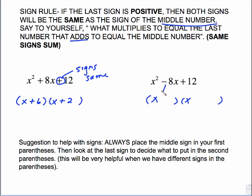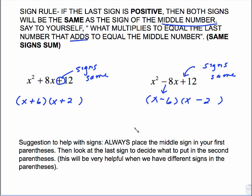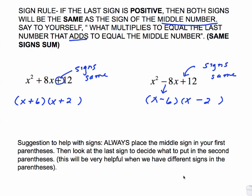For comparison, x squared minus 8x plus 12: x, x; because that's a minus, it automatically goes in the first parentheses. Plus in the last position tells me the signs are the same, so since the first is minus, the second is also minus. What multiplies has to be 6 and 2. Those two are very similar — it's just the signs are different. Always place the middle sign in the first parentheses and look at the last sign to decide the second parentheses. We will continue this in the next video titled Factoring Easy Trinomials Part 2.